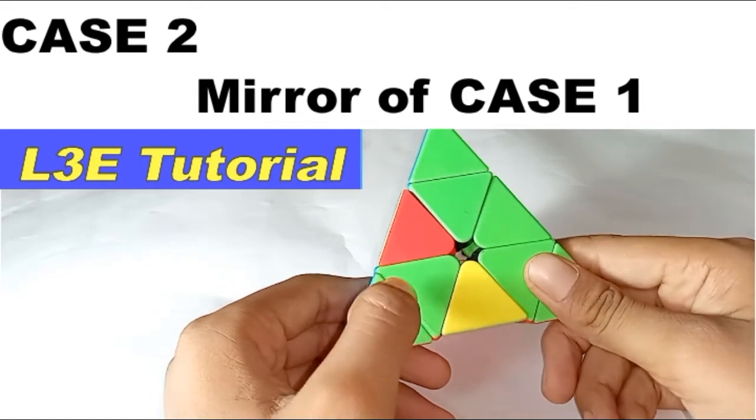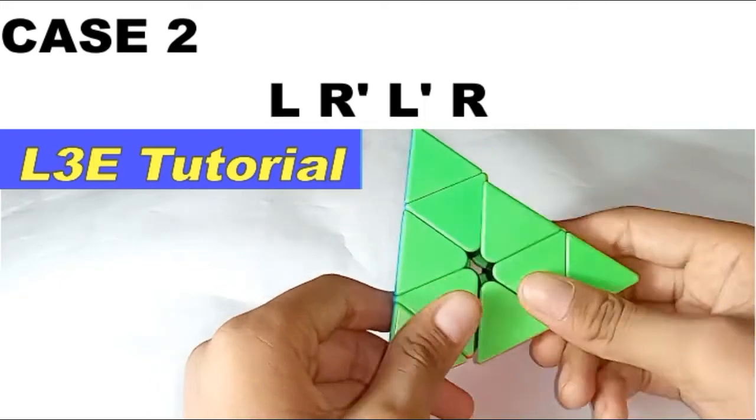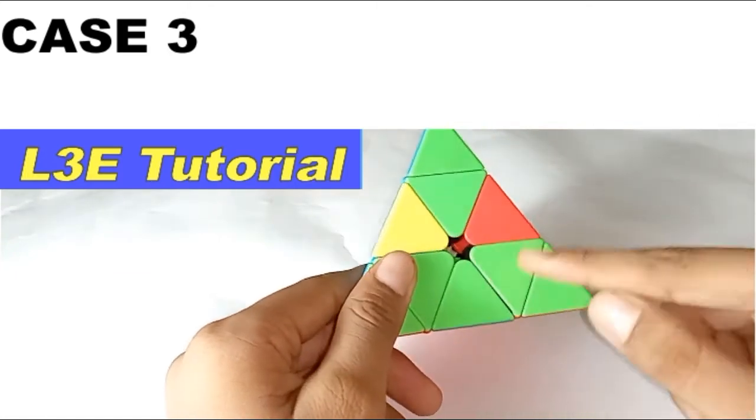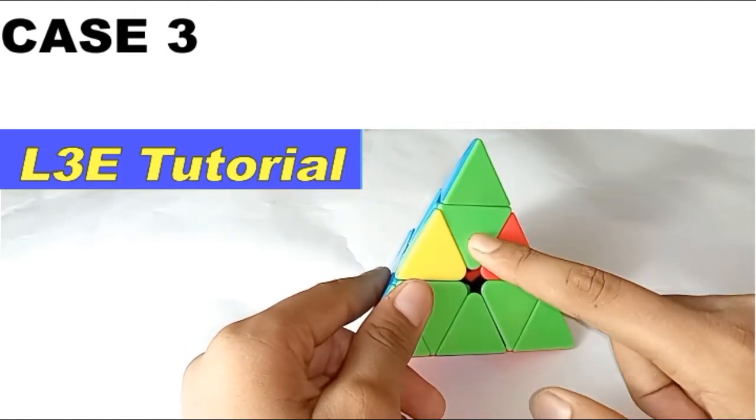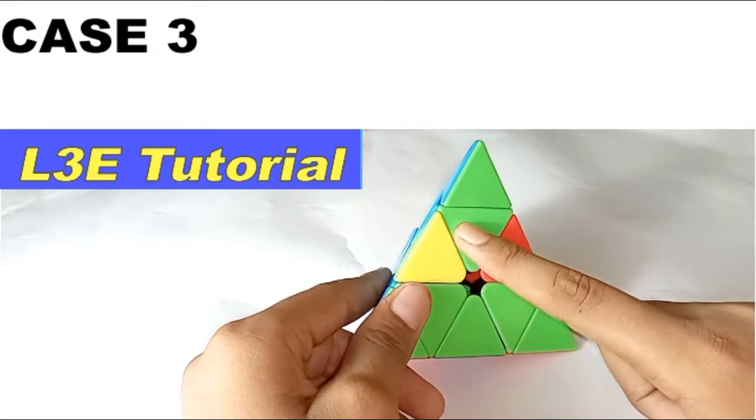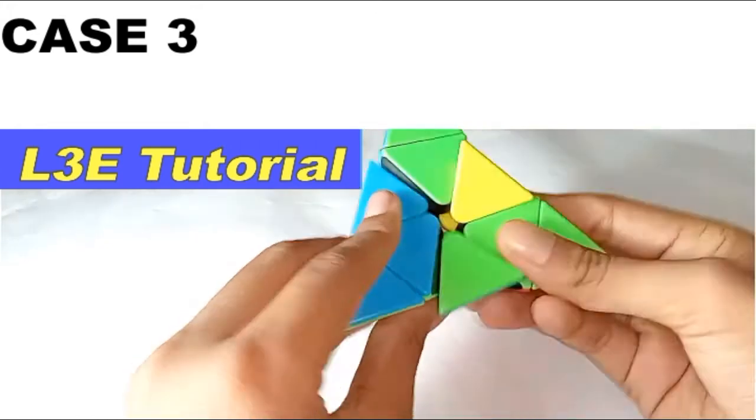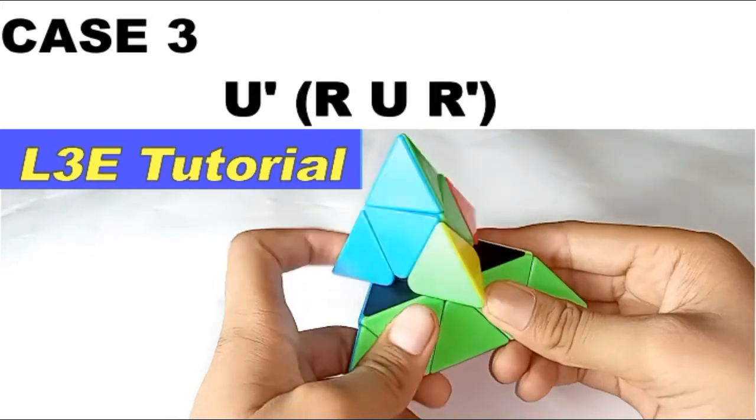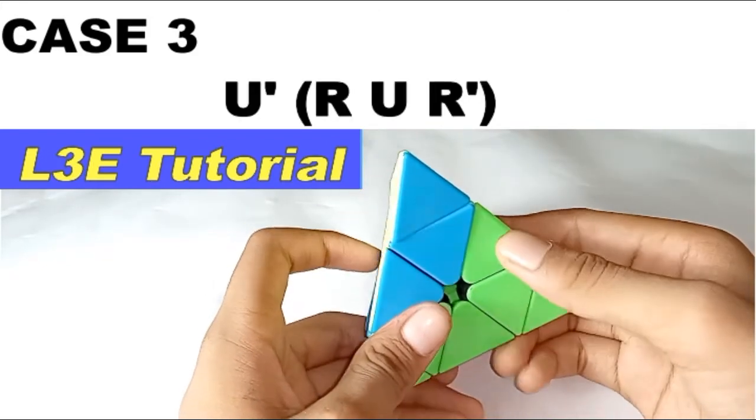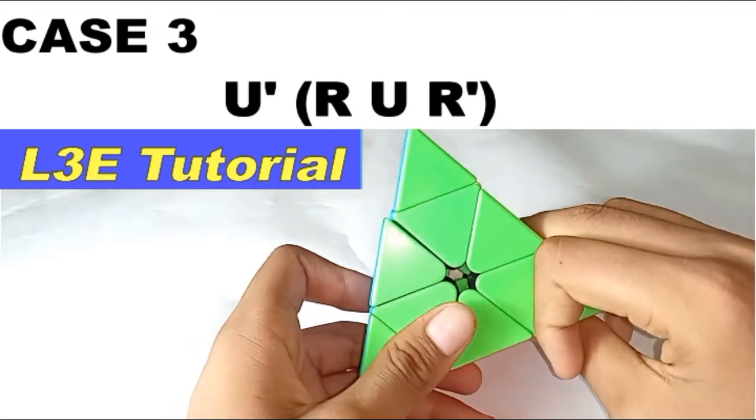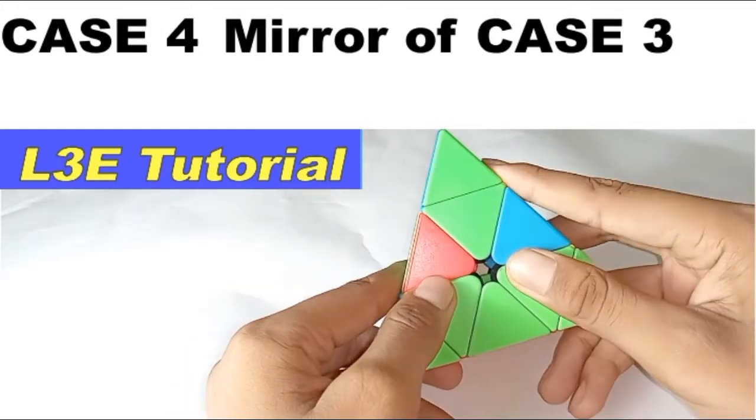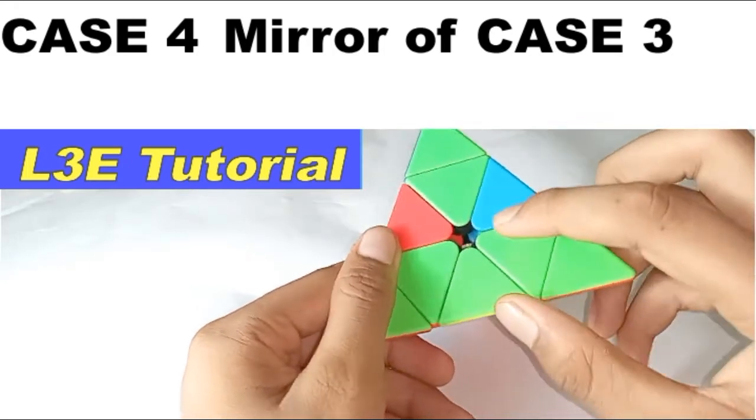Case number three: this color is matching to this color and this color is not matching to this color. If you do it like this it won't get solved. What you do is simply do a U prime position and then the simple insert. The same thing, this is a mirror, so for this you just do a U and then do it.